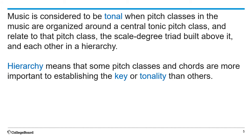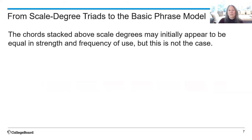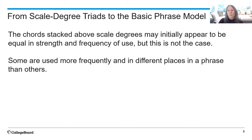This diagram is probably a familiar one to you. It's often used when you've just learned how to write scales and you're learning how to write triads. We have here a G major scale and written above each scale degree is the stacked triad. The other symbols are probably very familiar by now, including the Roman numerals, the popular music symbols for the names of the chords, the scale degree names, and other factors. When we look at a diagram like this one, it looks like all these chords are equally important, each one standing above its scale degree. But what we're going to find is that the chords, even though they may initially appear to be equal in strength and frequency of use, this is not the case. Some are used more frequently in different places in a phrase than others.